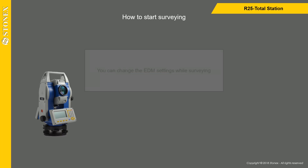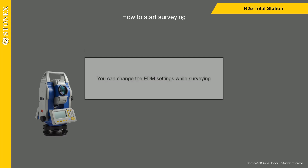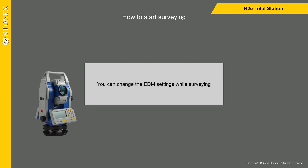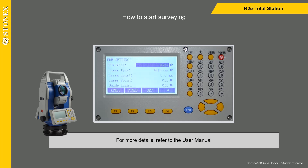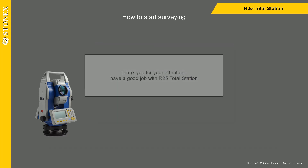You can change the EDM settings while surveying. Press F4 key to show other bar options, then press F3 key. For more details, refer to the user manual. Thank you for your attention.